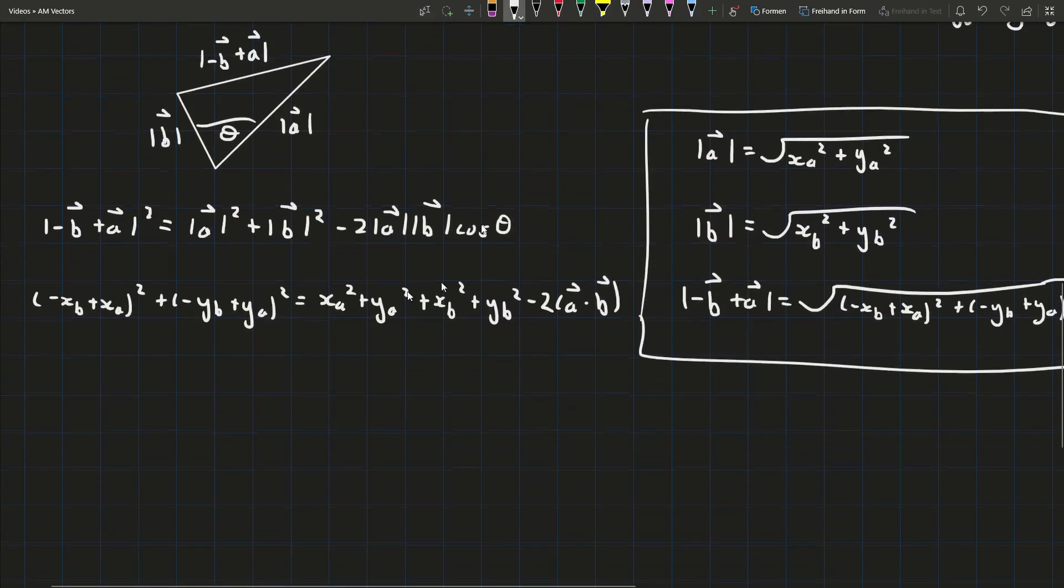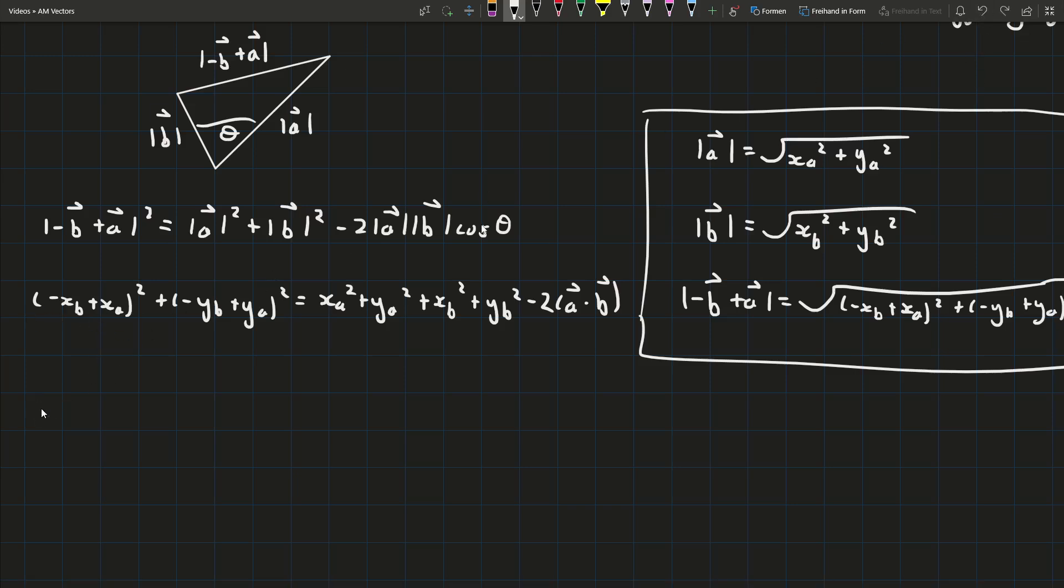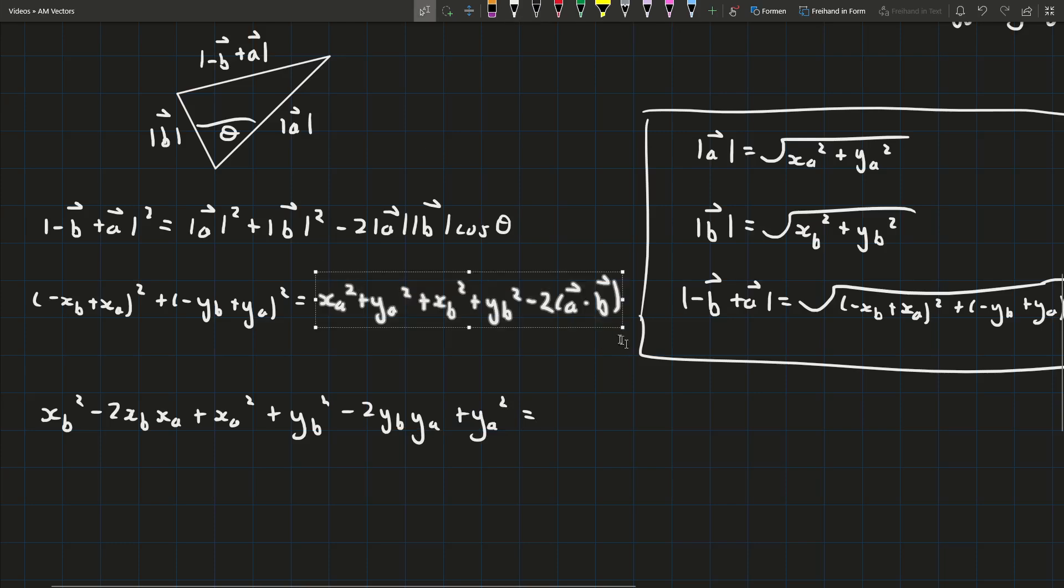Okay now we can expand out these brackets and you'll see this is where the magic happens. So if we expand out all these brackets we get xb² minus 2xb·xa plus xa² plus yb² minus 2yb·ya plus ya² equals and then the right hand side is staying the same.